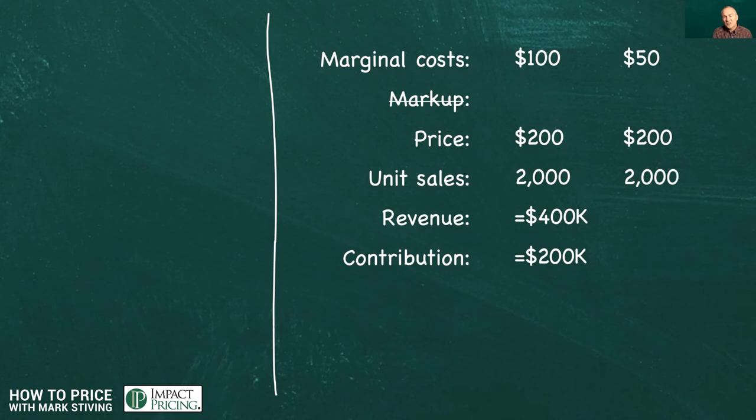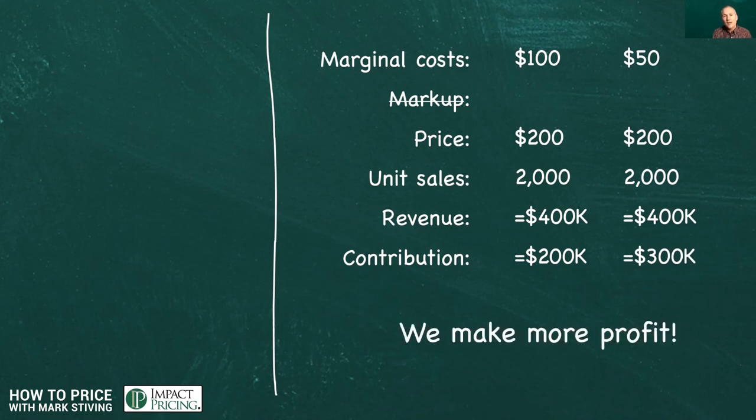Our unit sales is still 2,000 units because nothing changed. Revenue is still $400,000. What changed? We now make $300,000 in contribution margin. In other words, we make more profit. Doesn't that make sense? Why else are we trying to get cost cut?